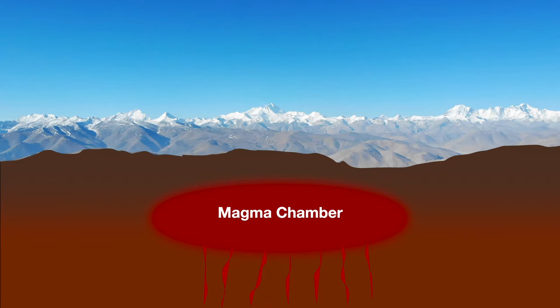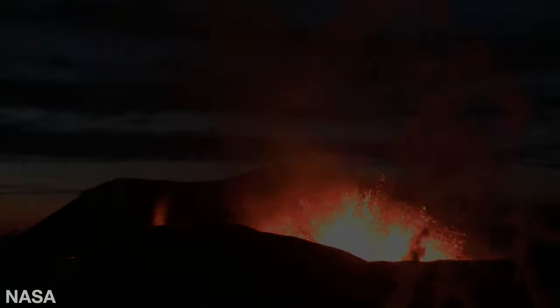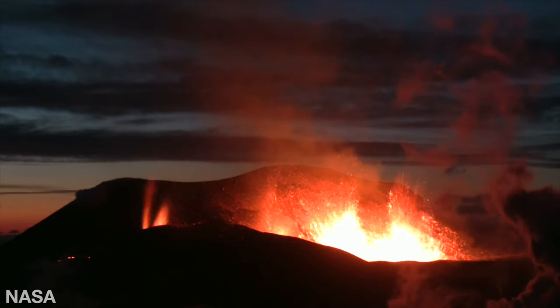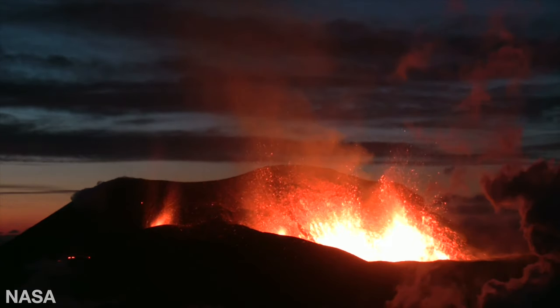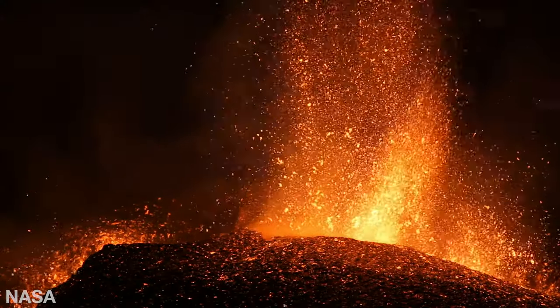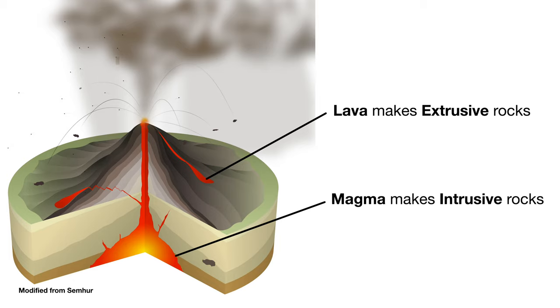In fact, earth is really just one giant igneous rock with a very thin layer of sedimentary rock on top. In order to form an igneous rock, we need to start with hot, molten magma. Magma is magma unless it erupts onto the surface, in which case it's lava. Rocks that form from magma are called intrusive rocks. Rocks that form from lava are called extrusive rocks.